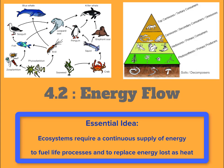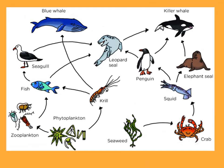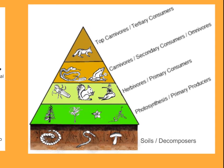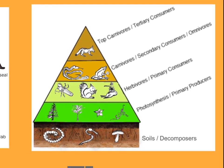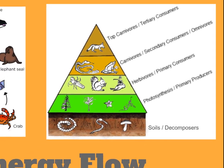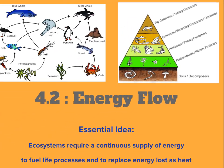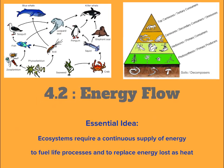Our essential idea here is that ecosystems require a continuous supply of energy to fuel life processes and to replace energy lost as heat. In the images here, we have a food web and a trophic-level pyramid. By the end, you should be able to have a better understanding of both of these.